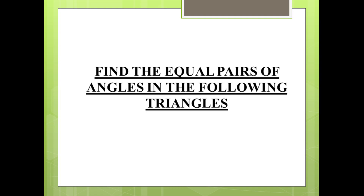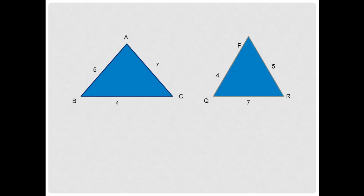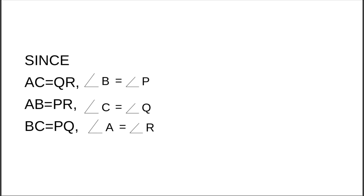In the exercise, find equal pairs of angles in triangles ABC and PQR. Since triangles with three equal sides have angles opposite equal sides that are equal: AC = QR gives angle B = angle P; AB = PR gives angle C = angle Q; BC = PQ gives angle A = angle R.